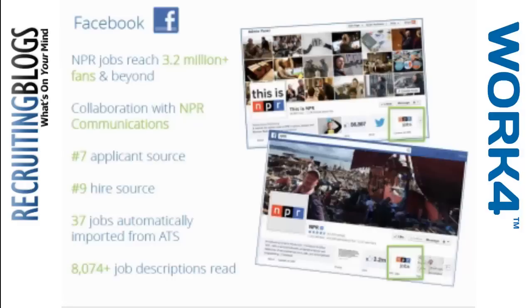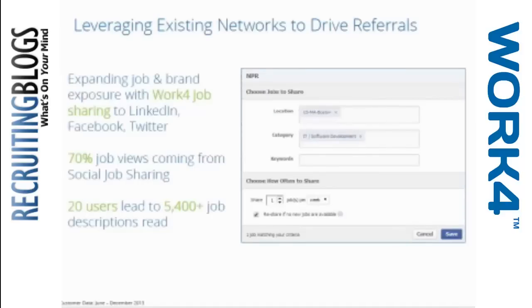Our recruiting team is really lean. The social sharing capabilities of Workfor were a huge help, because I could automate and queue up the NPR jobs account through the Workfor job sharing app to share three jobs a week — that was our frequency because we deliberately wanted to keep it low. But that drove tons of engagement. As you can see, 70% of the job views on our career site were driven from the social sharing feature. That really goes back to trend number two around going mobile, because if we're driving this traffic to a site that's not mobile optimized, they're going to drop off. You want to get their attention, but you want them to follow through all the way to the apply section.